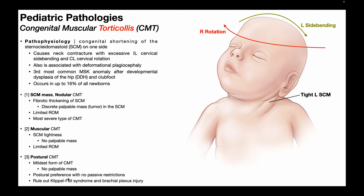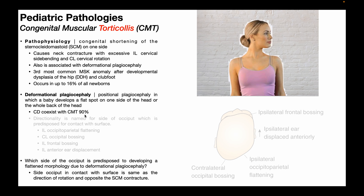The third type is the mildest form, called postural CMT. There's no palpable mass and no SCM tightness on either side — just a postural preference with no passive restrictions. You would not find limited range of motion of the neck; the baby simply has a preference for sitting in, say, left side bending and right rotation, with no tightness or palpable mass. In this case you would also need to rule out Klippel-Feil syndrome and a brachial plexus injury that might be predisposing the baby to position themselves that way.